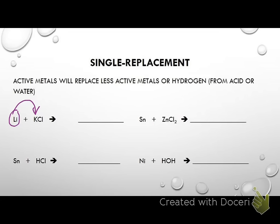So now lithium will join up with chloride. You've got to write the formulas correctly. Lithium is a plus one, chloride is a negative one, so they go together as LiCl. Then it kicks out potassium by itself. You go back and see if it needs to be balanced — in this case it does not. Everything was a one-to-one ratio, so it's good.